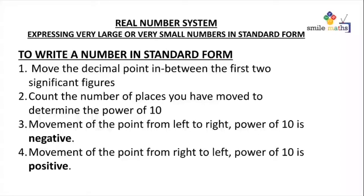The number of places you move determines our power of 10. Movement of the decimal point from left to right makes the power of 10 negative — so if you move left to right five times, the power of 10 is negative five. Movement of the point from right to left makes the power of 10 positive — for example, moving three times from right to left gives a power of 10 equal to positive three.